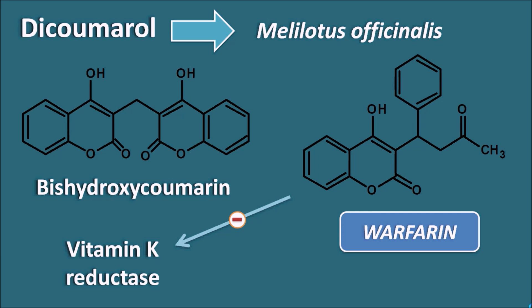Vitamin K is very important for the gamma-carboxylation of clotting factors 2, 7, 9, and 10. When warfarin inhibits the vitamin K reductase enzyme, it inhibits the activation of these factors so that coagulation cannot take place. That is why warfarin acts as an oral anticoagulant.